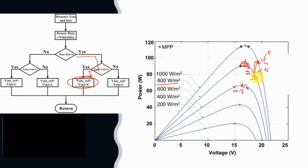The system then moves to point number five. The interesting observation here is that as the irradiation level changes rapidly, the system keeps drifting farther and farther from the maximum power points. As a result, the system requires many more iterations to return from point five back to point six, which is ultimately the maximum power point for 1000 W/m² irradiation. This phenomenon — where the photovoltaic system moves away from the optimal operating point — is known as the drifting phenomenon.